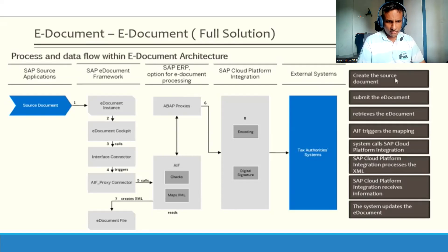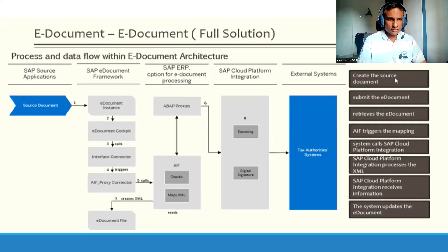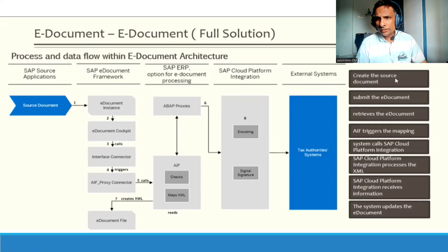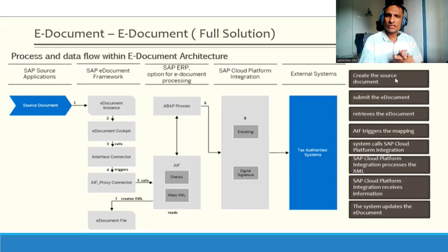After the e-doc cockpit, there is one more transaction - proxies - which is a little technical. The framework has options for heat-off processing using CPI. Whatever information is received in the e-cockpit, with the help of CPI it will be sent to external systems - either a tax system, and from that tax system it goes to the government portal, or it might go directly to the government portal, depending on the architecture.